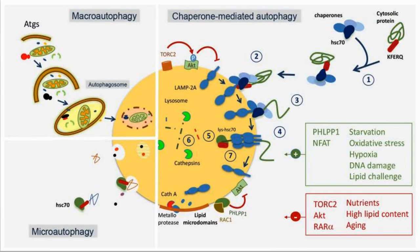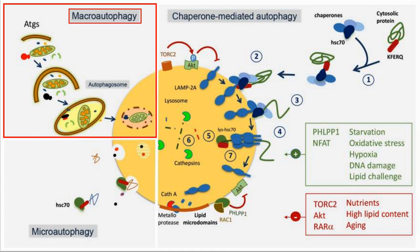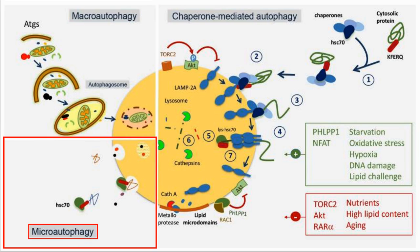Here we have the three main types of autophagy: macro, micro, and chaperone mediated. In macro autophagy, which is commonly just called autophagy, a membrane surrounds the components to be degraded and carries them to the lysosome, where it fuses with the lysosome and delivers the contents which are then degraded. In micro autophagy, proteins are absorbed directly by the lysosome, where a vesicle is formed on the surface and the protein is ingested and degraded.